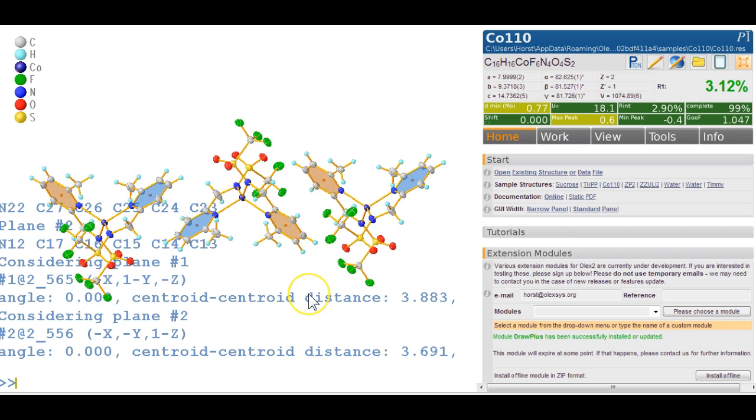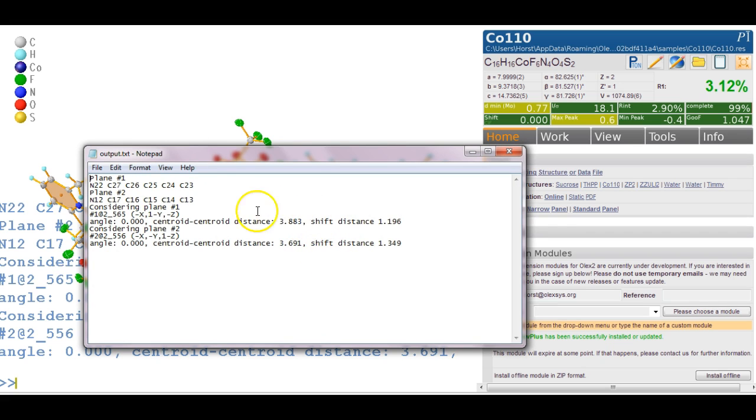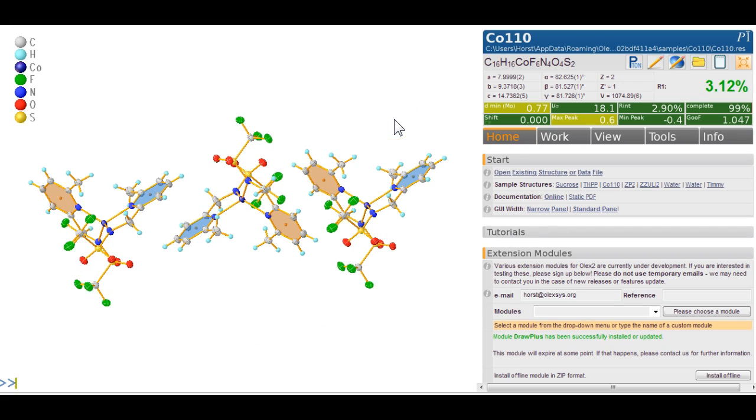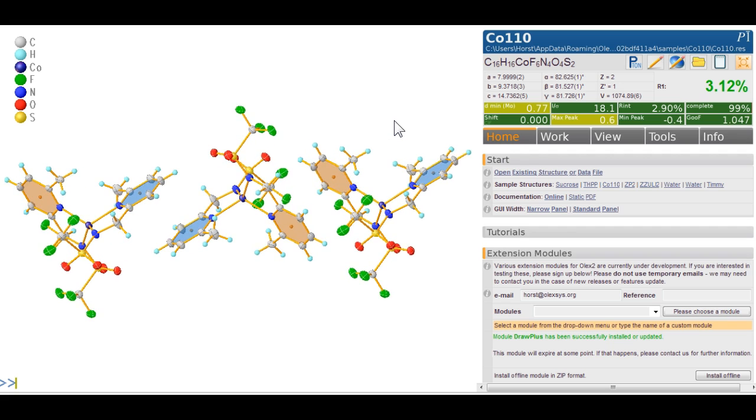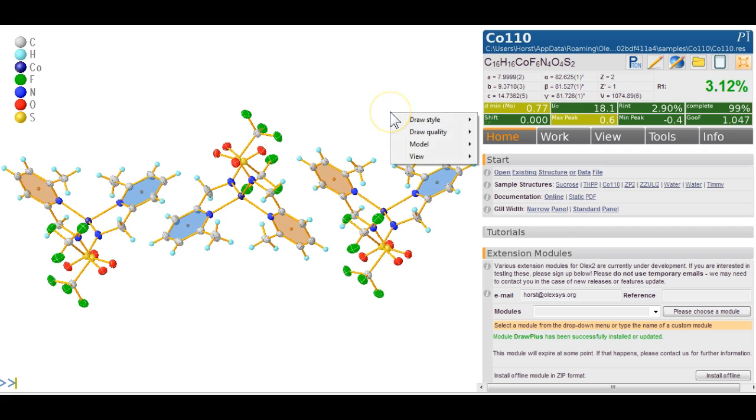And a lot of information in the background again. If I type text, you can see all this information shift distances and centroid centroid distances and so on and so forth. Right now I type clear because I don't want this at the moment. Can we tidy this picture up a little bit? So we zoom in a little bit.